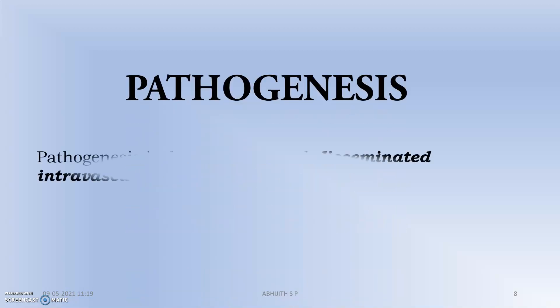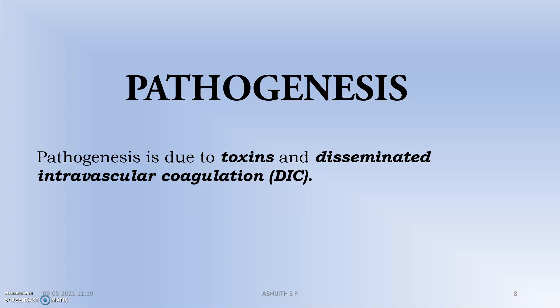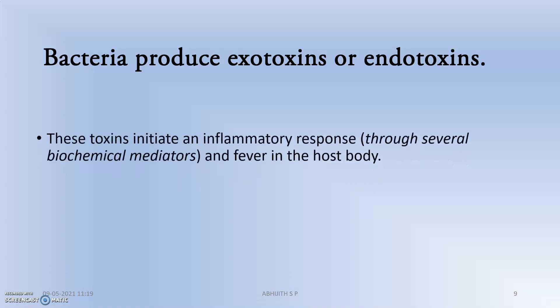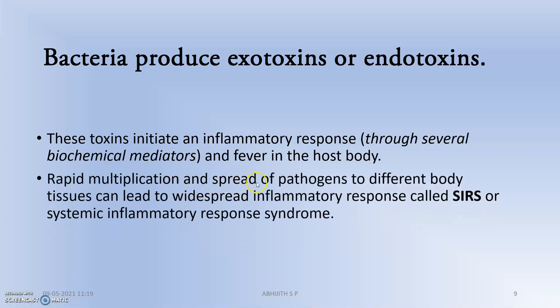Moving to the pathogenesis: it is due to the toxins produced by bacteria and disseminated intravascular coagulation occurring inside the vessels. Bacteria produce exotoxins or endotoxins, which initiate an inflammatory response through several biochemical mediators and also produce fever in the host body. Rapid multiplication and spread of pathogens to different body tissues can lead to a widespread inflammatory response called SIRS — systemic inflammatory response syndrome.